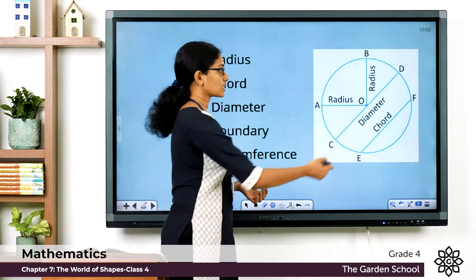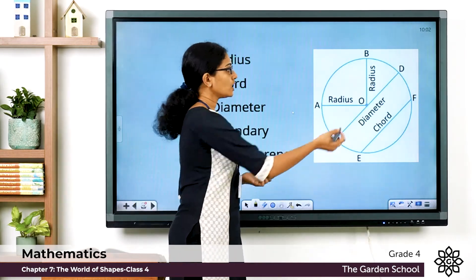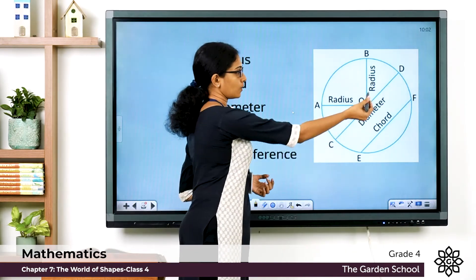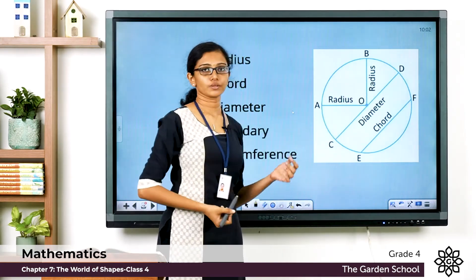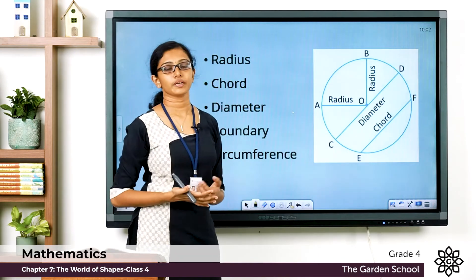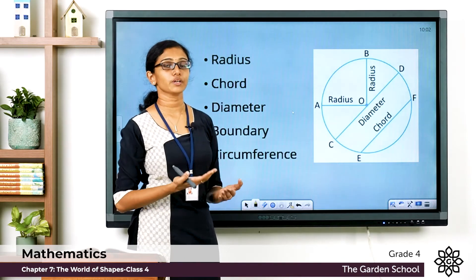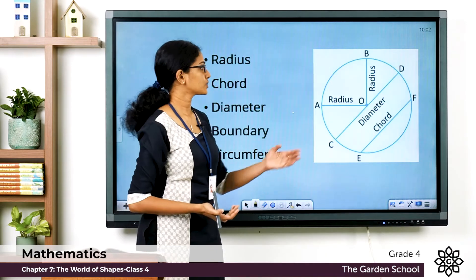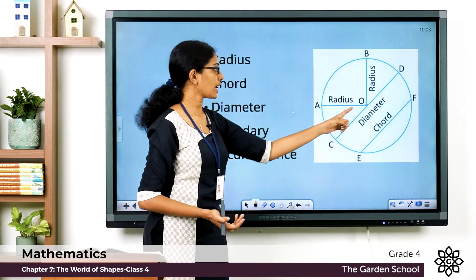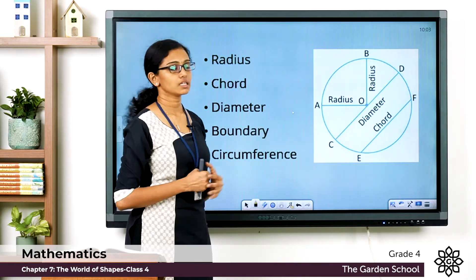So OA is a radius of the circle, OB is also a radius, OD is also a radius, and OC is also a radius. When you talk about more than one radius, we call it radii. So OA, OB, OD, and OC are radii of this circle.